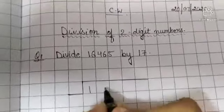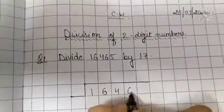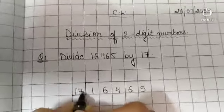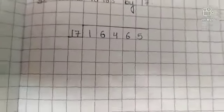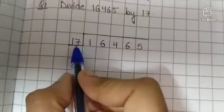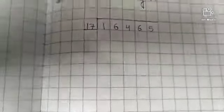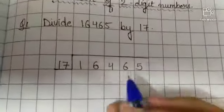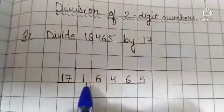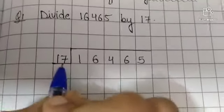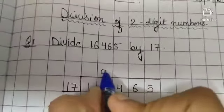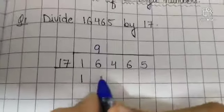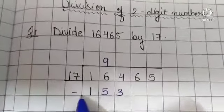1, 6, 4, 6, 5 by 17. So first, 17 is the divisor and 16465 is the dividend. Firstly, 17 in the table is 16, so we will consider 164. 17 nines are 153. Now subtract.